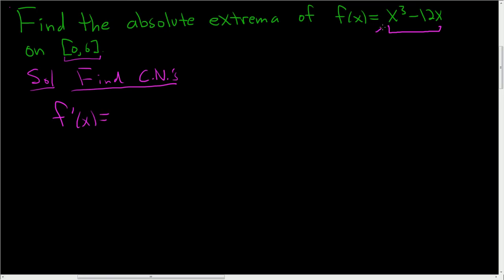Let's see, so here you have x cubed. So when you take that derivative, you'll just get 3x squared. And then here you have minus 12x. So when you take that derivative, you'll just get minus 12.